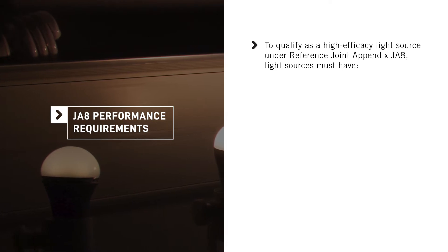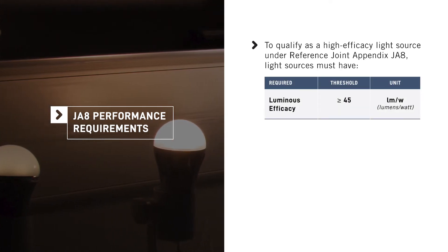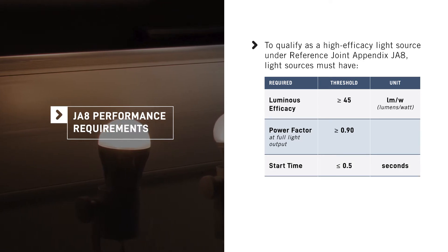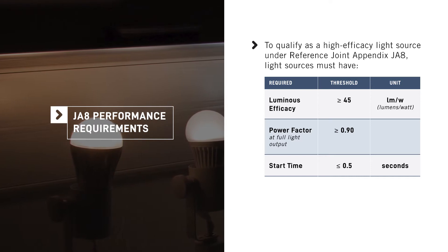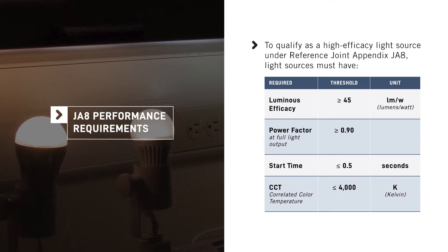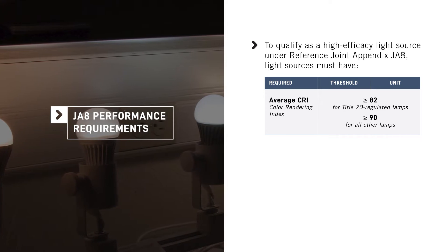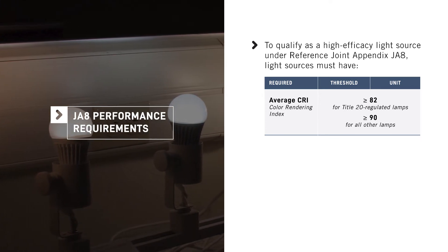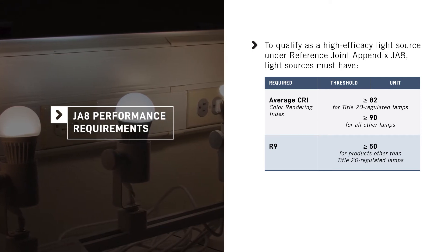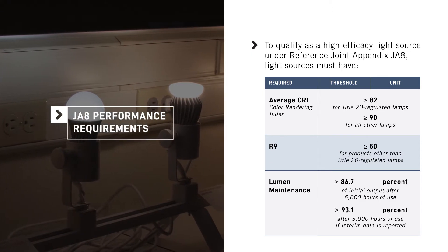To qualify as a high efficacy light source under Joint Appendix JA8, light sources must have a luminous efficacy greater than or equal to 45 lumens per watt. The power factor must be greater than or equal to 0.90 at full light output. Light source start time should be less than or equal to one half second to prevent delays between applying power and the start of illumination. The CCT should be less than or equal to 4000 Kelvin. The CRI must be greater than or equal to 82 for Title 20 regulated lamps, and greater than or equal to 90 for all other lamps. The R9 must be greater than or equal to 50 for all products other than Title 20 regulated lamps. Lumen maintenance must be equal to or greater than 86.7% of the initial output after 6,000 hours of use.